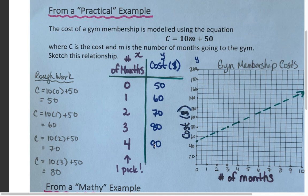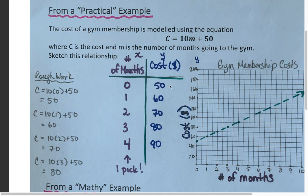Looking at the table, from 50 to 60 to 70 to 80, we're increasing by 10 each time. So going from three months to four months, we'll also increase by 10, giving us $90. This connects back to our rate of change. I now have a table of values — I picked my independent x values, calculated my dependent y values, and I have a bunch of points to sketch on my graph.